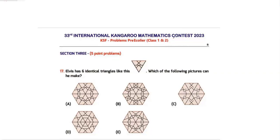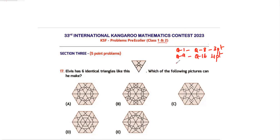Hello friends, today we will be doing Math Kangaroo Level 1 and 2, year 2023. We'll be doing five-point questions. In the earlier video I had covered the three-point questions, which are questions 1 to 8, and then questions 9 to 16, which were the four-point questions. In this video we'll cover the five-point questions, which is from question 17 to question 24.